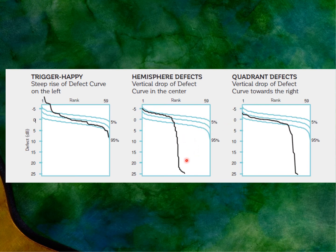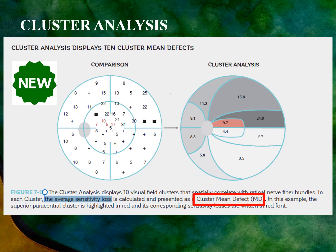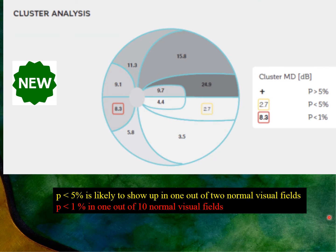This pattern shows localized affection in half of the field (50%), and another shows localized changes in one quarter of the field. In the new software, a cluster analysis is available — the software groups test point locations into clusters, calculates the average defect for each cluster, and displays the result.